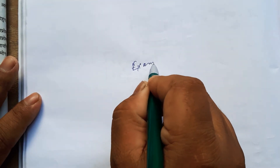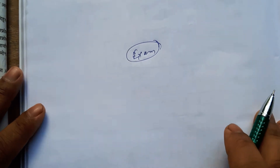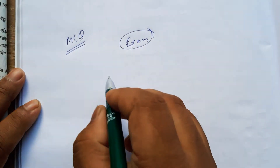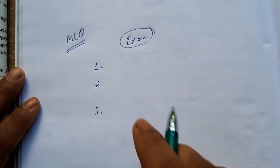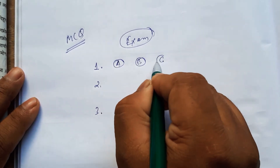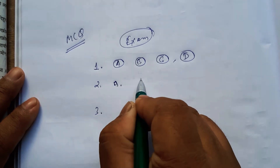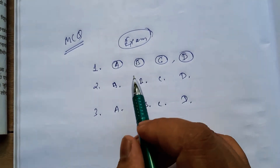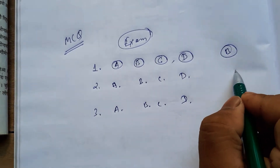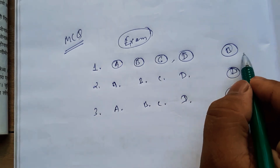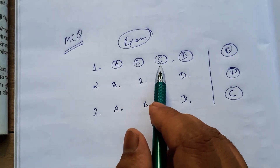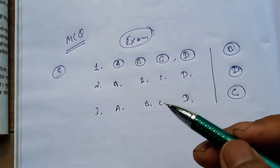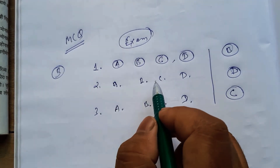This example involves a student named Yusoda. This is like an MCQ — multiple choice questions type problem. In a competitive exam, you have multiple questions with options A, B, C, D. If you answer correctly you get marks, and if you answer incorrectly marks are deducted.